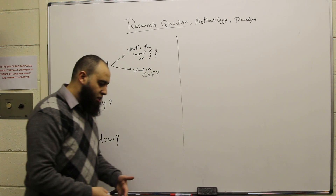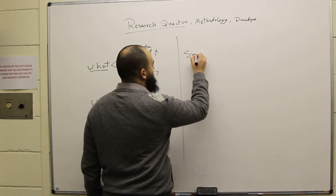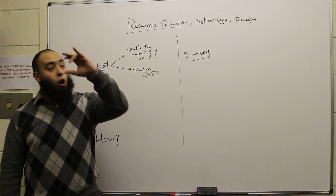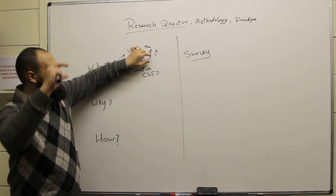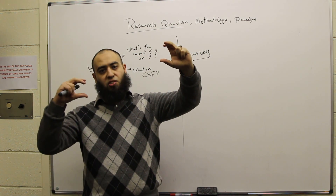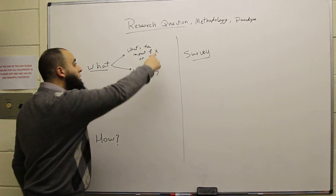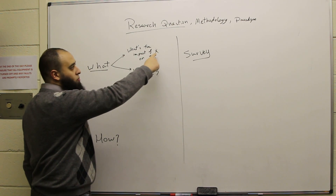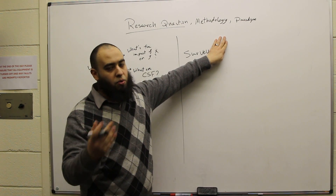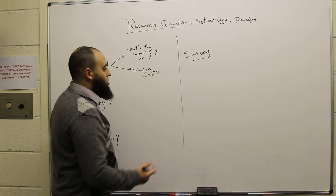Researchers have many methodologies, but there are four prominent, famous ones. The first, which is very common, is survey research. In survey research, you have a questionnaire. You have concepts — for example, citizenship and performance — and you have a set of questions about each concept. You need to find the relationship between them.